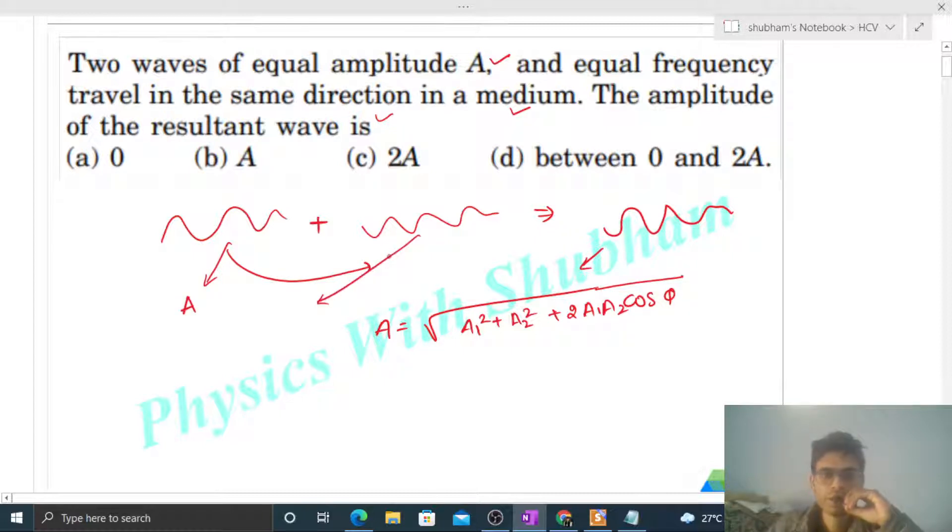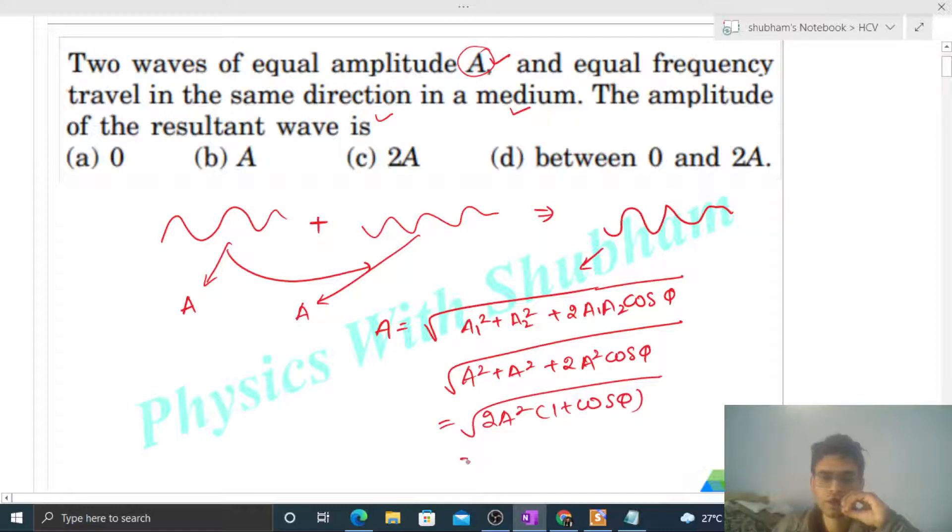And A2 is the amplitude of the second wave. Both are the same, so here it's A square plus A square plus twice of A square into cos phi, and its root. So it will be twice of A square, one plus cos phi, and its root. This will be under root two into A into under root one plus cos phi.